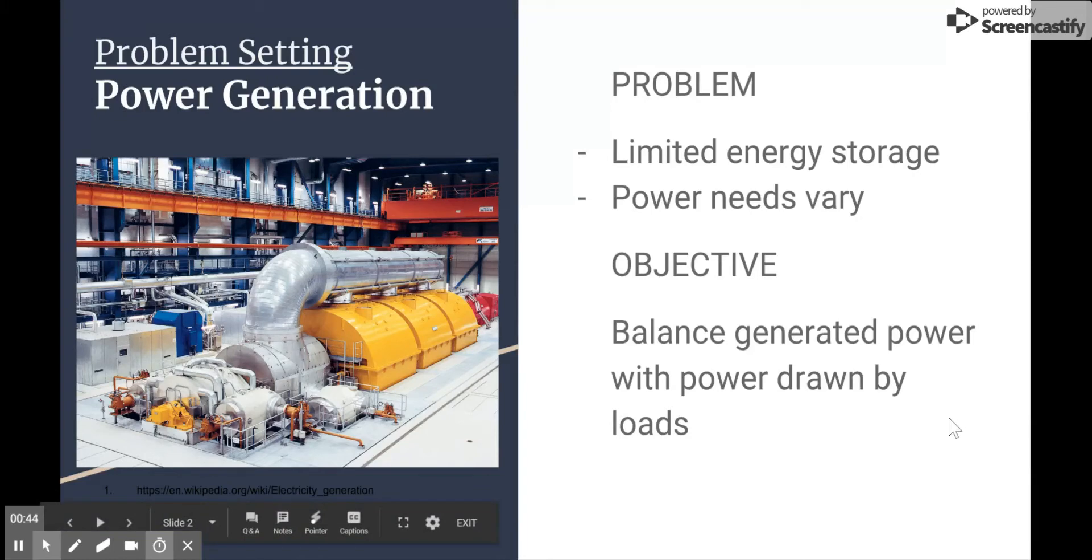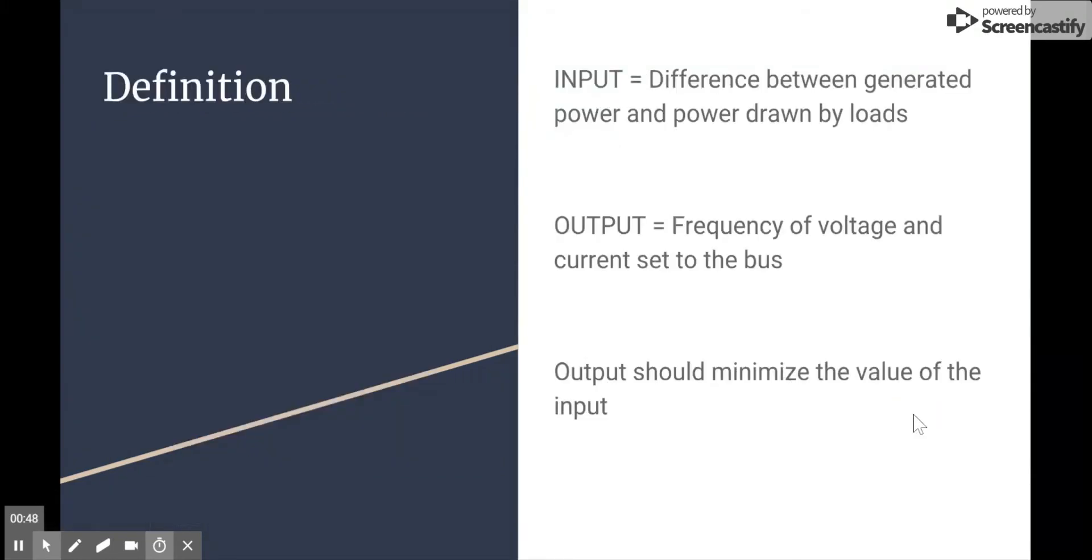Overall, the goal of this is to balance the generated and loaded power. We're going to define our inputs and outputs of this system because it's a single input single output system. The input is the difference between the power generated and the power required. The output of this system is the new frequency to set to the generators to adjust and match the load and generated power.